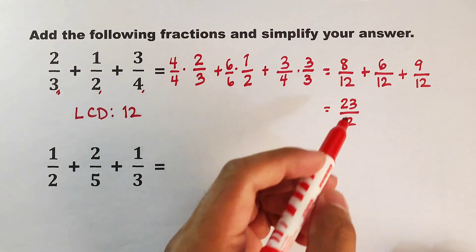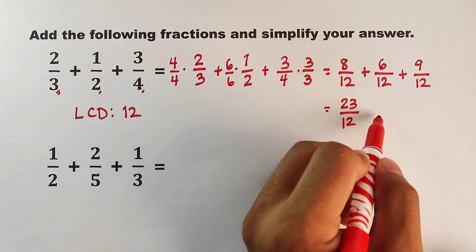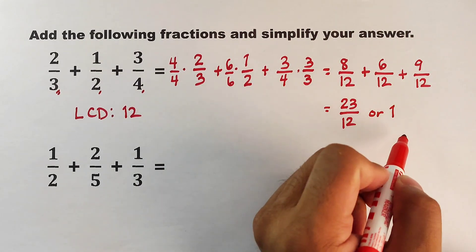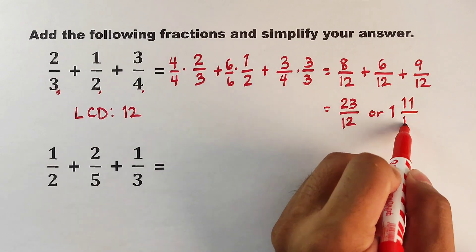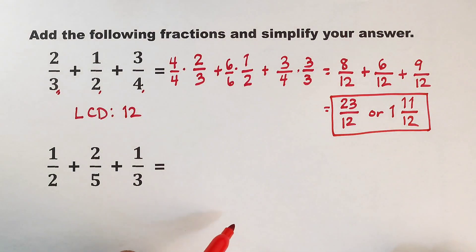So we need to convert this into a mixed number. The equivalent mixed number of 23 over 12 is simply 1 and 11 over 12. So these are the possible answers for item number 1.